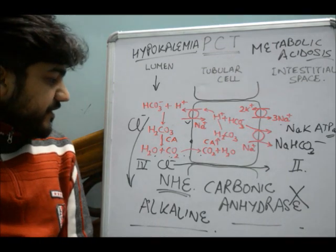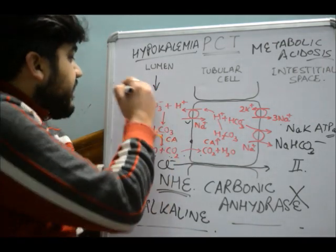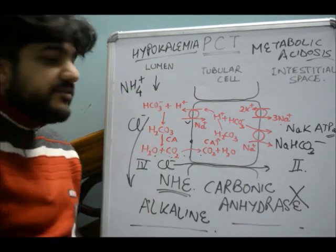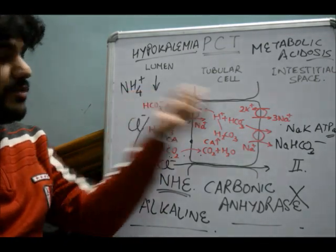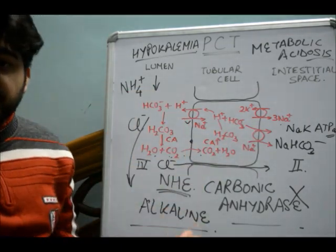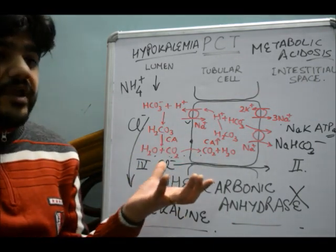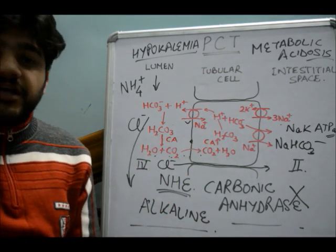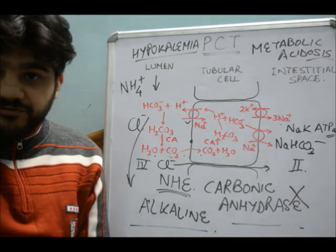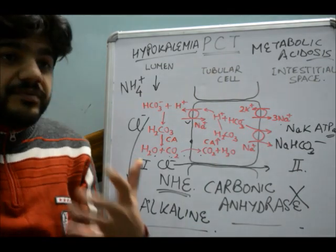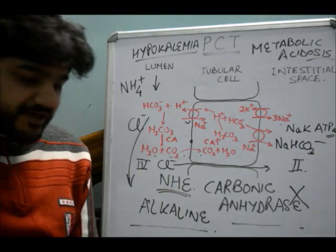Carbonic anhydrase inhibitors also interfere with the release of NH4+, the ammonium ion. The ammonia that is produced is unable to be secreted into the tubule. When this is not secreted, hepatic encephalopathy can be worsened, because ammonia is the major factor leading to hepatic encephalopathy. So hepatic coma can be worsened — that is another problem with carbonic anhydrase inhibitors.